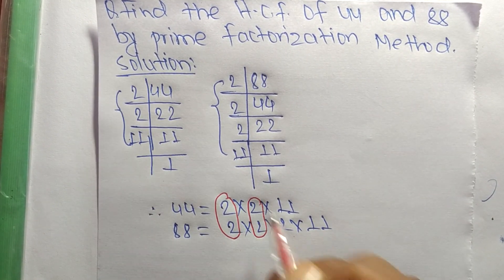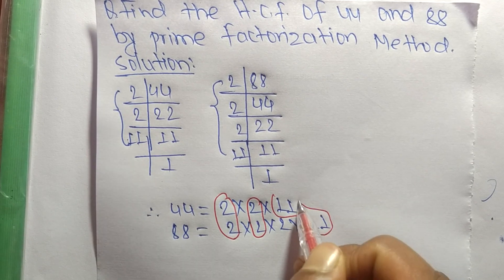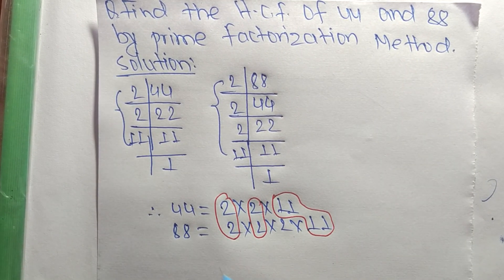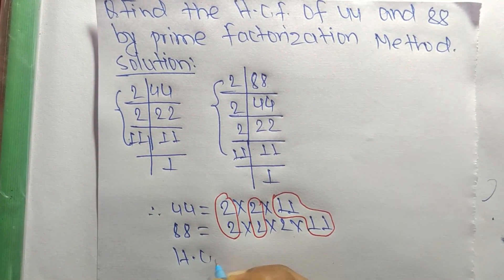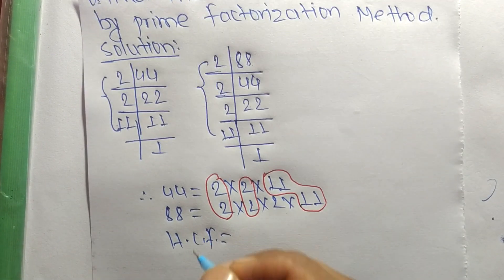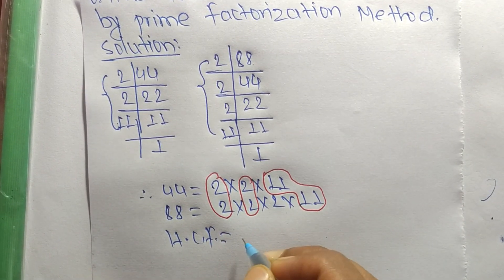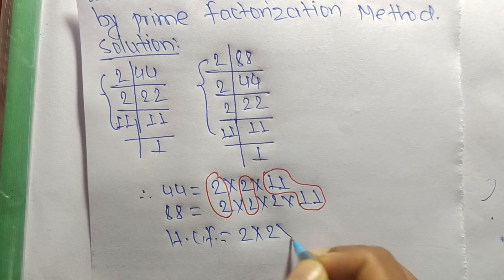So the HCF is equal to the common factors, which are 2, 2, and 11.